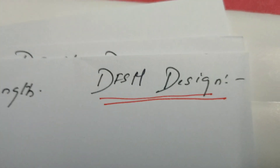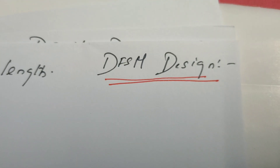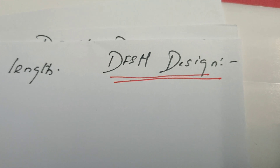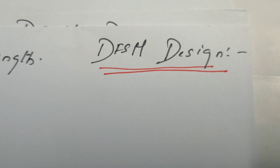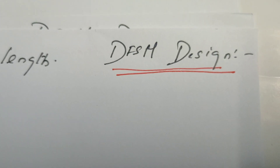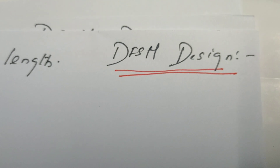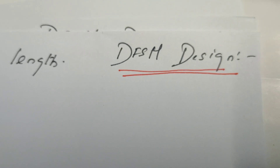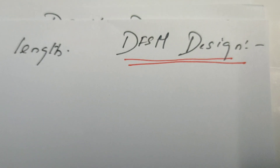In this video we are going to continue the discussion of design of deterministic finite state machines. We are going to see some more problems. I have already made a video on DFSM design — this is the second video.